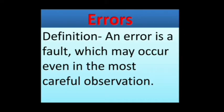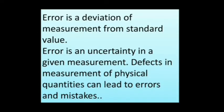Definition of error: An error is a fault which may occur even in the most careful observation. Error is a deviation of measurement from standard value. Error is an uncertainty in a given measurement. Defects in measurement of physical quantities can lead to errors and mistakes.